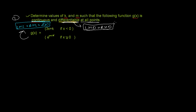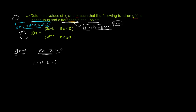Let's first check continuity at x equals zero. The left-hand limit is: limit as x tends to 0 minus of g(x).